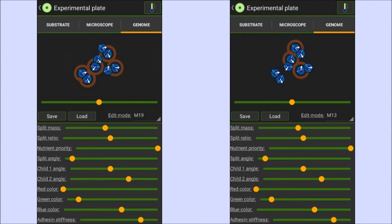So, what are these characteristics? Well, looking at them side by side again, they have a fairly mid-range split mass, a split ratio that slightly favors the first child, a split angle of around 30 degrees, with each child angled either side of 180 degrees, no red color, a small amount of green, and a goodly portion of that recognizable blue, with some fairly stiff adhesin.